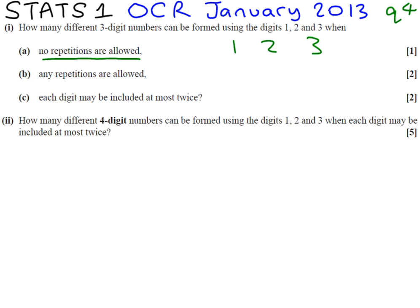You should know how to order three objects. Three factorial which is three times two times one which is six.